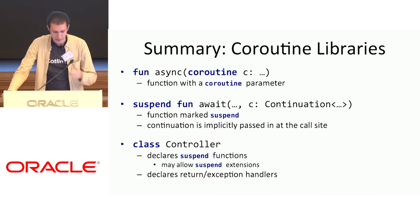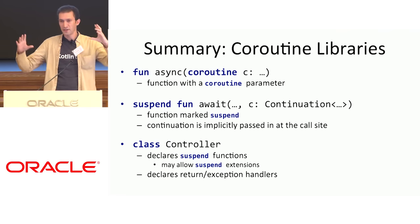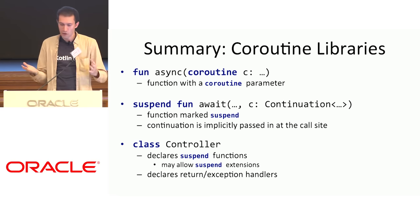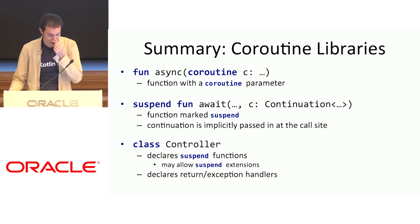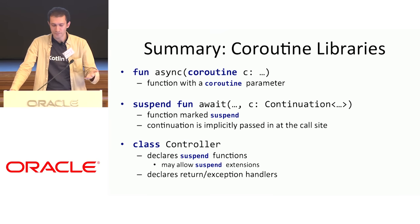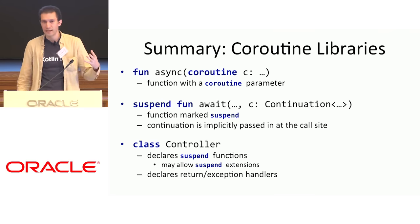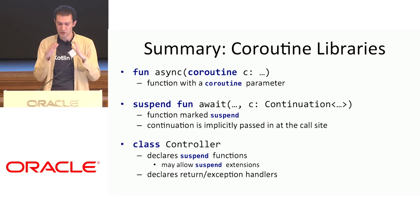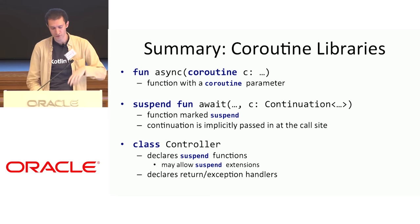Summary on the library part: all you need to create a library that implements async is to declare the coroutine builder async function with a coroutine parameter. All other parameters may be arbitrary. You must have one coroutine parameter to be a coroutine builder. Then declare suspend functions, normally inside a controller. The continuation is implicitly passed inside those functions. The controller class handles all intermediate state and is the scope declaring the suspension functions, plus handlers for return values and exceptions.